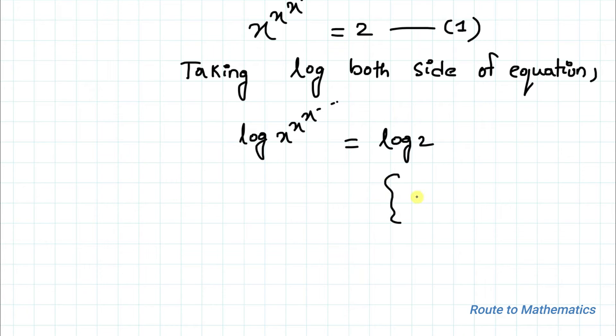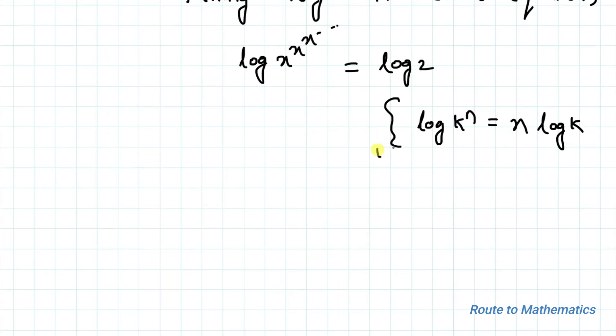In the next step, we are going to apply the logarithm power rule, that is log of k to the power n is equals to n multiplied with log k. By applying this exponential rule, we can write this implies x to the power x to the power x and this goes on, log x equals to log 2.